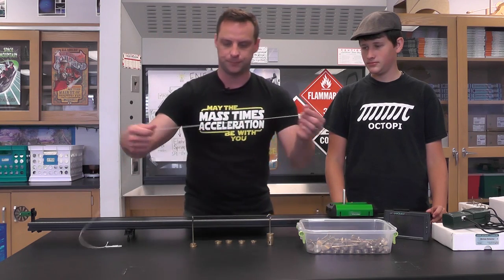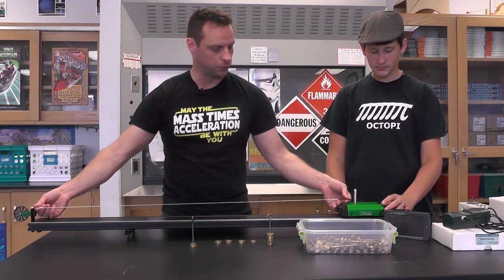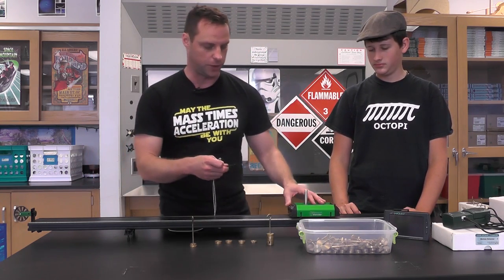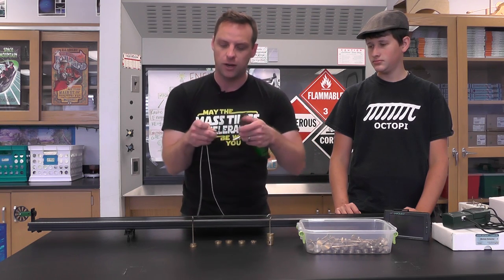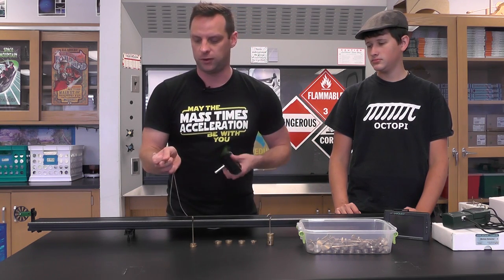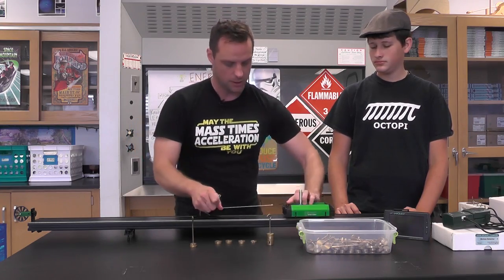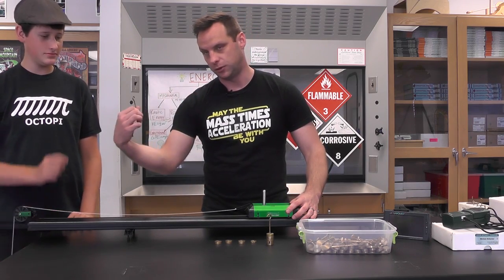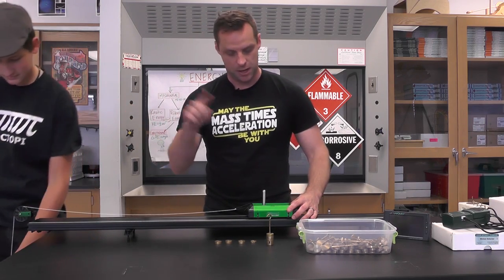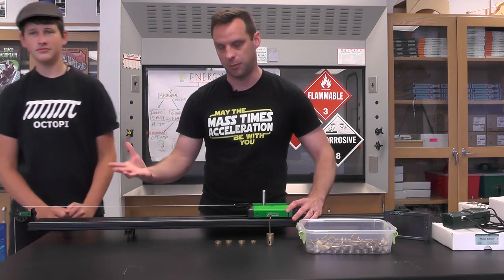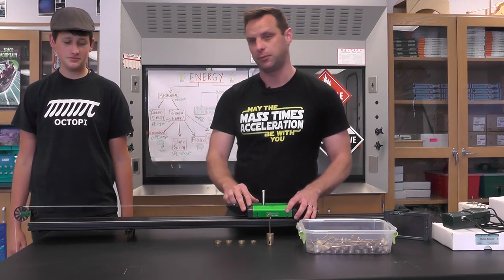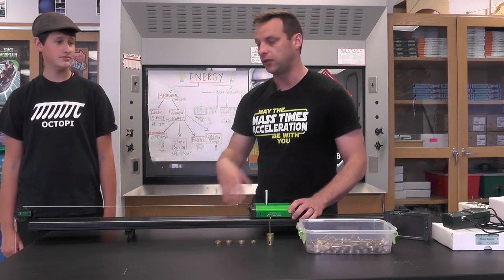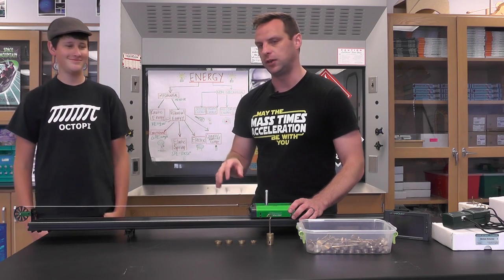You're also gonna need a string that's an appropriate length. About a meter will do fine for the height of our tables which are about 80 centimeters off the ground, and the carts have a little hole right there that this paper clip is gonna fit really nicely through. Beautiful, and then the hanging mass goes over there. So now you have your M and M tabletop set up and it's a modified Atwood machine.